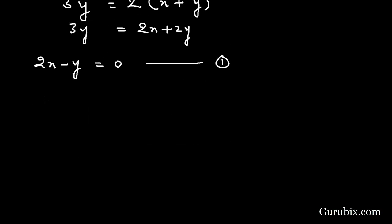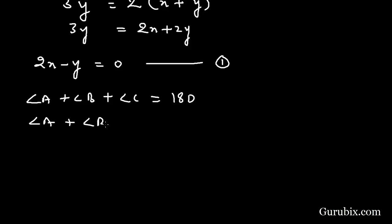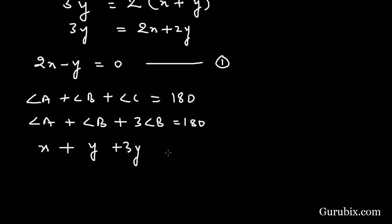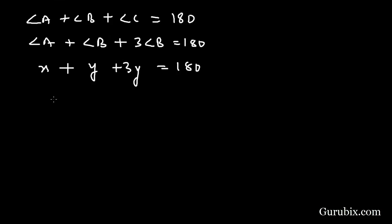We know the property of a triangle that the sum of all angles equals 180 degrees. So angle A plus angle B plus angle C equals 180 degrees. Since angle C equals 3 times angle B, we substitute to get x plus y plus 3y equals 180, which simplifies to x plus 4y equals 180. This is our equation number two.